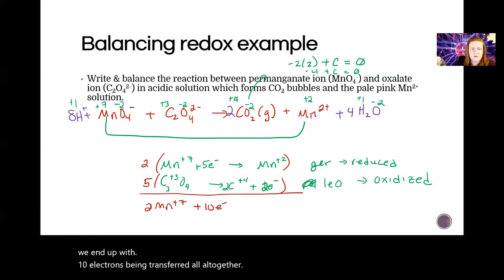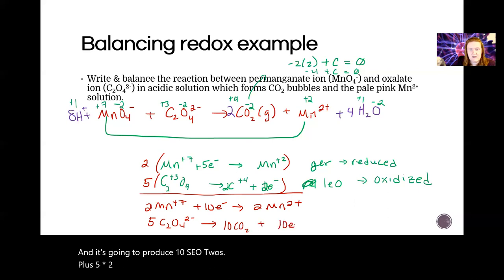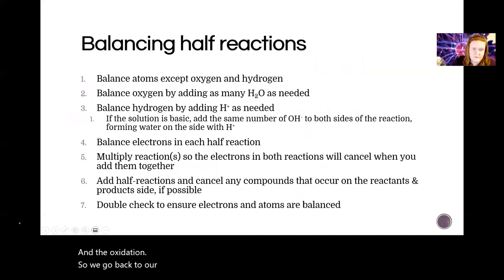I'm just distributing my two, so two Mn7+, 10 electrons, and it's going to produce two Mn2+. And then for the carbonate, we're going to go five C2O4 and it's going to produce 10 CO2 plus five times two is 10 electrons. So this is what we need. We need the electrons to be the same in both the reduction and the oxidation. Okay, so we go back to our original reaction, and we're just going to put them together.